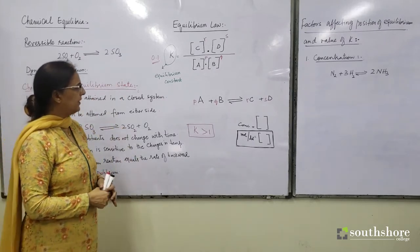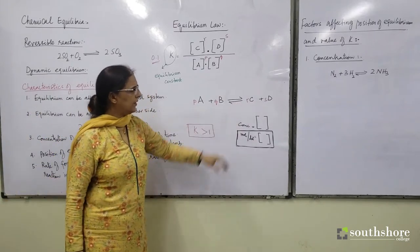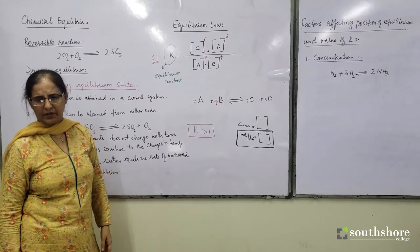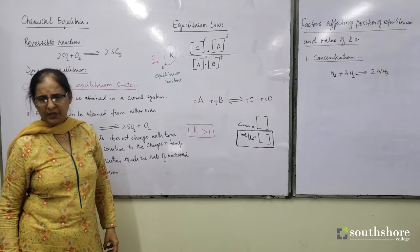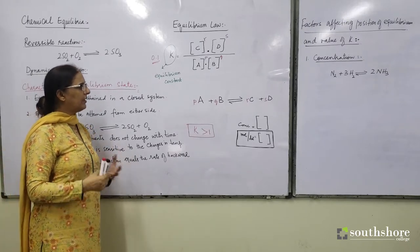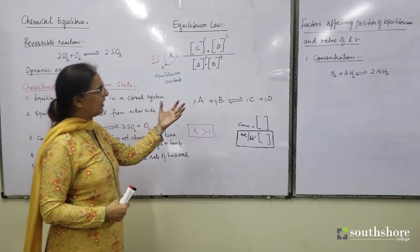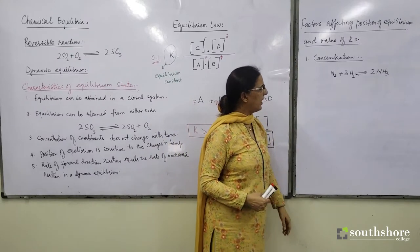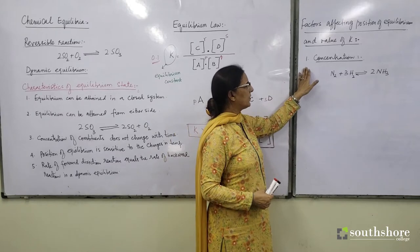If your system is in a state of equilibrium and you change one of the factors which affect the equilibrium position, then the system will try to get rid of that change. We are going to look at factors affecting position of equilibrium and value of K, and the first factor I am going to talk about is concentration.